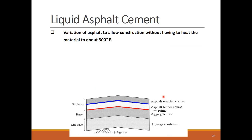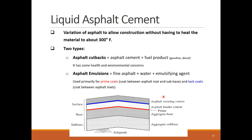We have covered so far the asphalt concrete mix used to construct the pavement wearing and binder courses. Liquid asphalt cement is applied between the different layers of the pavement to maintain adhesion and waterproofing between the layers. The liquid asphalt state is maintained during material application on the construction site using additives that allow heating the mix to temperatures much below those applied in asphalt concrete mixing. Based on the applied additives, there are two types of liquid asphalt cement. First, asphalt cutbacks are made by adding a fuel product like gasoline and diesel to the asphalt mix, which is clearly not very environmentally friendly.